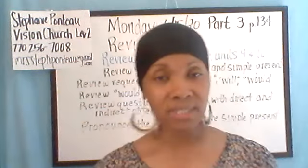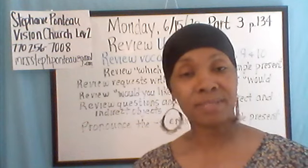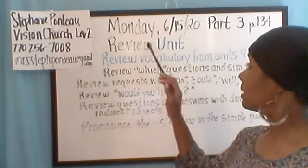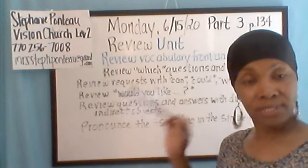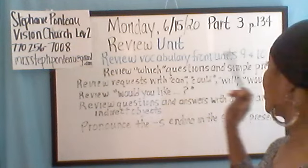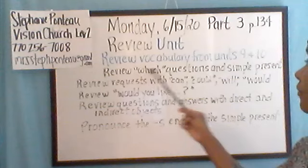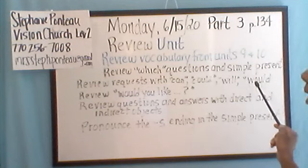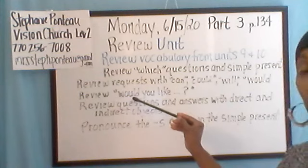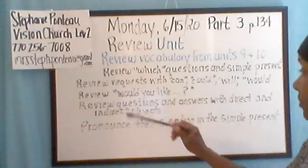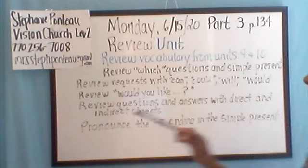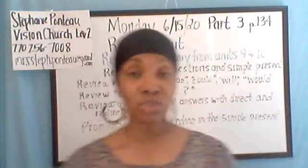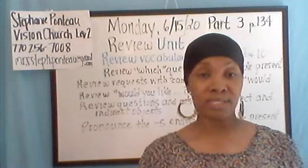We have a lot to cover. This is a review unit because we are about to finish up this semester, so there's a lot to cover in the next few lessons. We're going to review vocabulary from units 9 and 10, which questions and simple present, requests with can, could, will, and would, and 'would you like' to make a polite offer. We're also going to review questions and answers with direct and indirect objects, and pronounce the S ending in the simple present. We won't do all of that in this video, but those are the things we're reviewing this week.